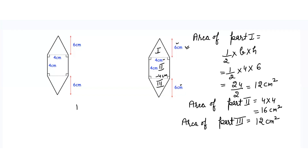So total area is equal to 12 plus 16 plus 12. If you add them all together you will get 40 centimeter square. For such helpful videos do not forget to hit the like and subscribe button and please do write a comment in the comment section.